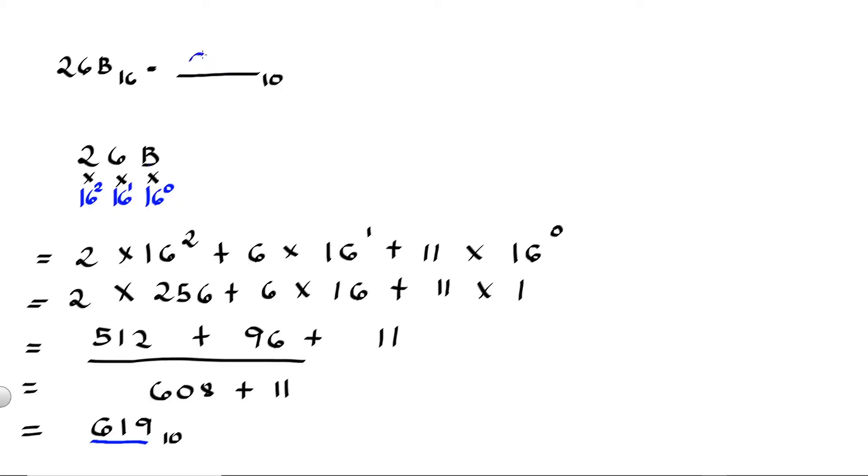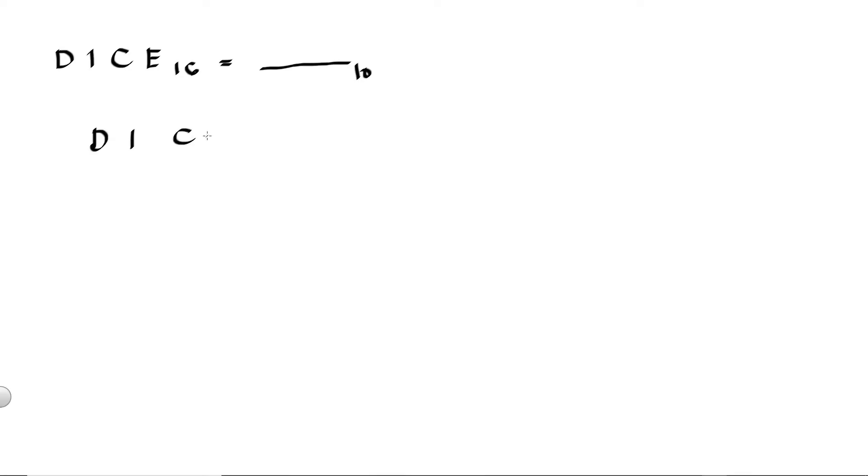This is 619 decimal. And for our second example, let's convert 1CE hex into decimal. Next is to multiply 1CE by its positional value. Since this is hex, the rightmost digit has a positional value of 16 raised to 0, next is 16 raised to 1, then 16 raised to 2 — an increasing power of 16.